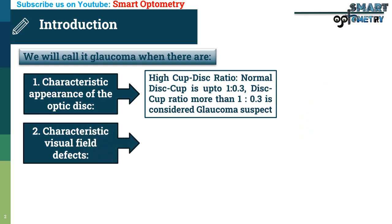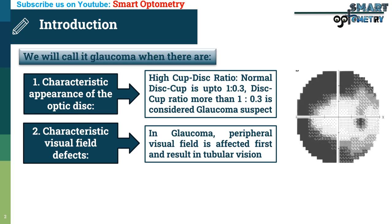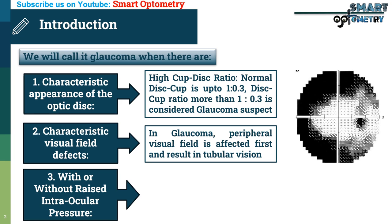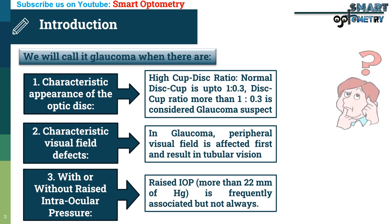Characteristic visual field defects: in Glaucoma, the peripheral visual field is affected first, resulting in tubular vision. With or without raised intraocular pressure — raised IOP of more than 22 mmHg is frequently associated but not always.